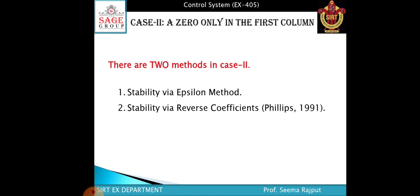So, what is Case 2? In Case 2, a zero appears only in the first column. There are two methods in Case 2: the first one is stability by the epsilon method, and the second one is stability by reverse coefficients, as established by Phillips in 1991.